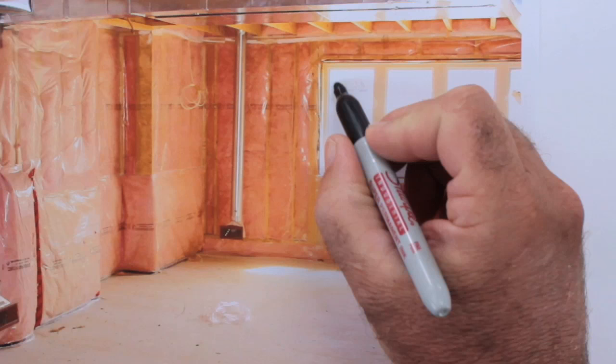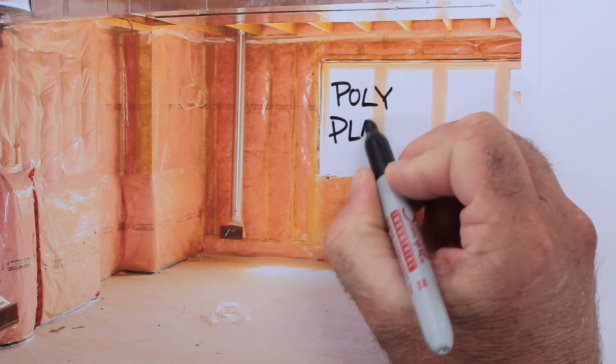It's usually a kind of polyethylene plastic that's applied to the inside face, the warm face of stud frame walls.